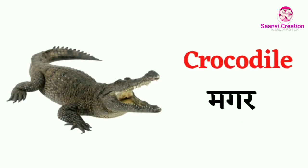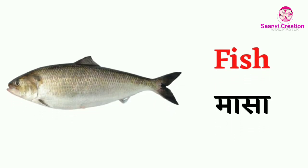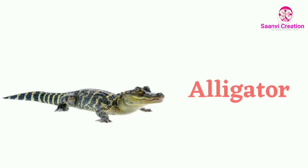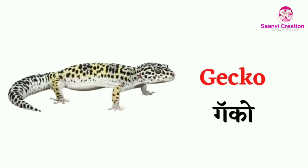Crocodile (C-R-O-C-O-D-I-L-E) — crocodile means 'Magar'. Fish — fish means 'Masa'. Alligator — alligator means 'Ghariyal'. Gecko (G-E-C-K-O) — gecko means 'Geko'.